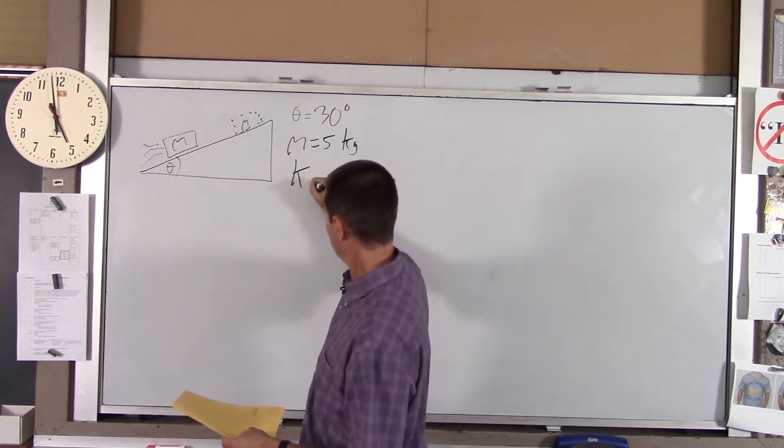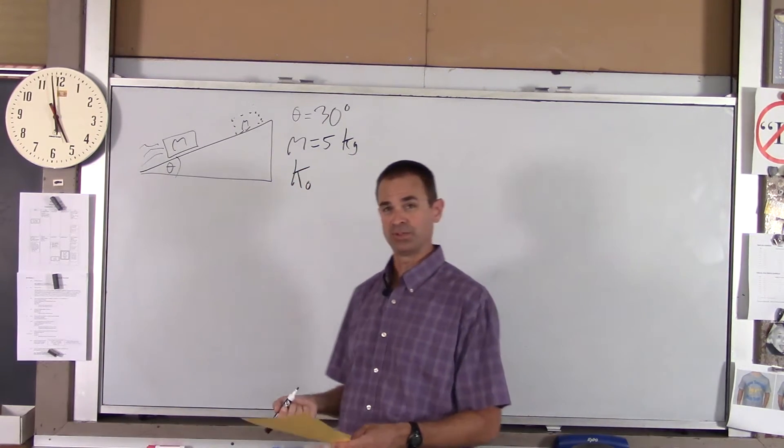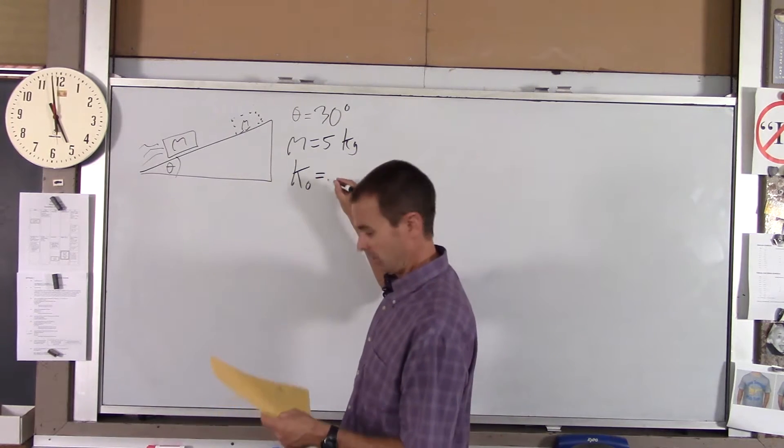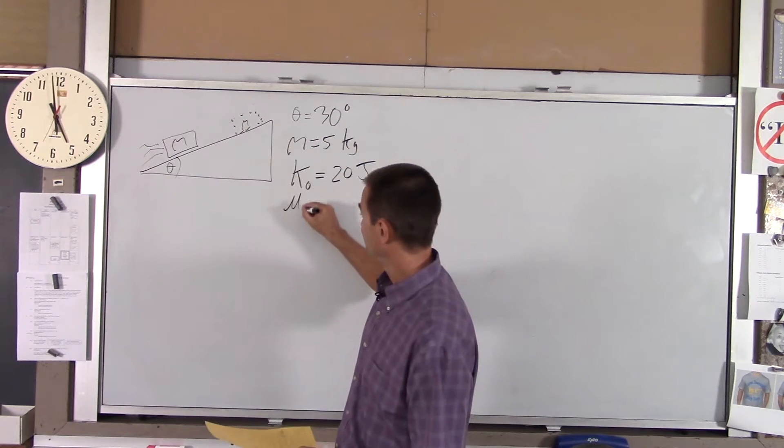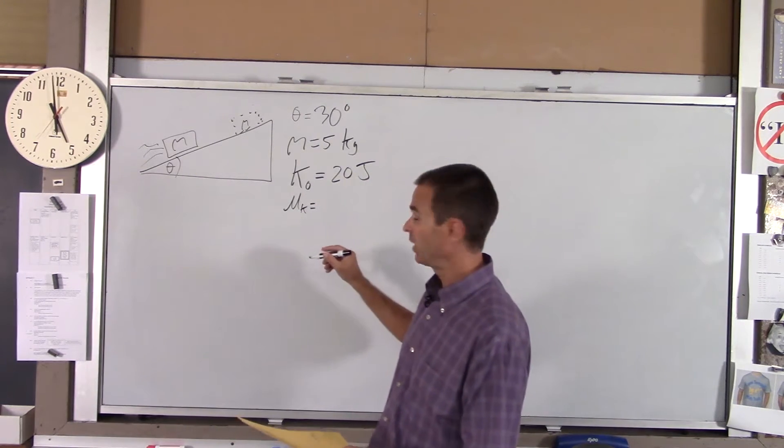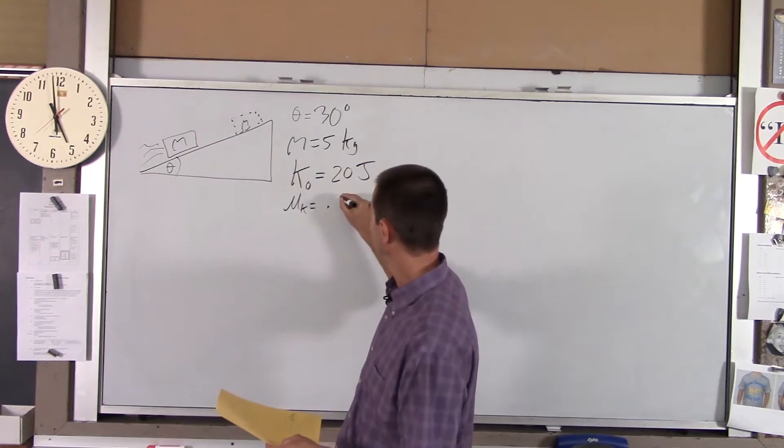Mass is 5 kilograms. The initial kinetic energy, starting kinetic energy, is 20 joules. And the coefficient of sliding friction between the surface and the block is 0.3.